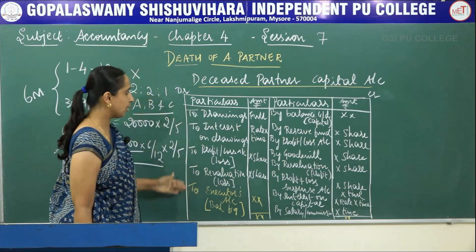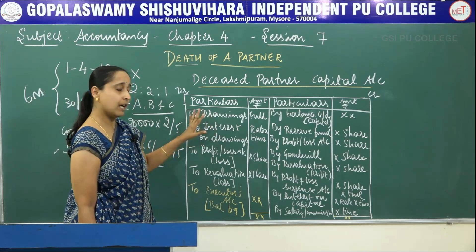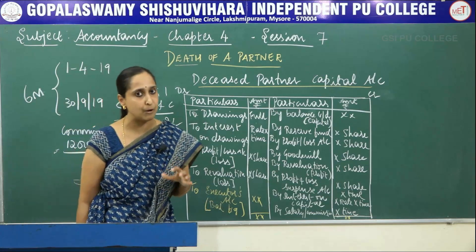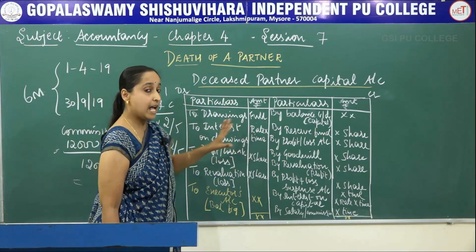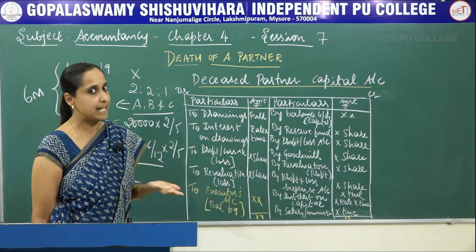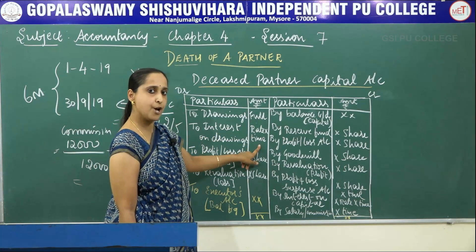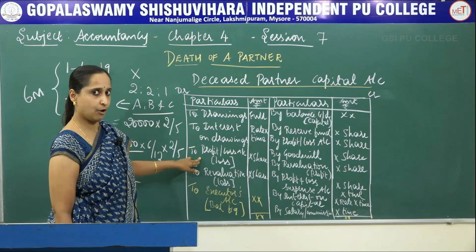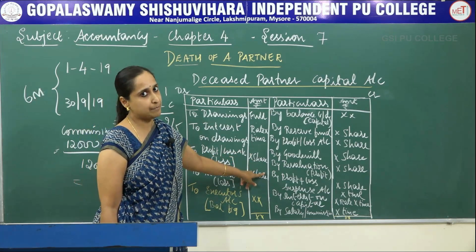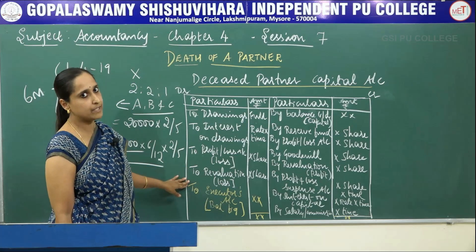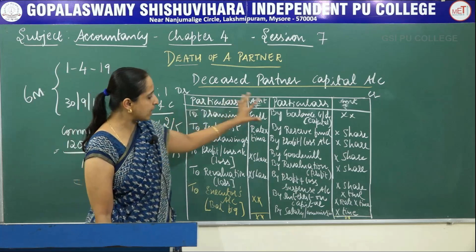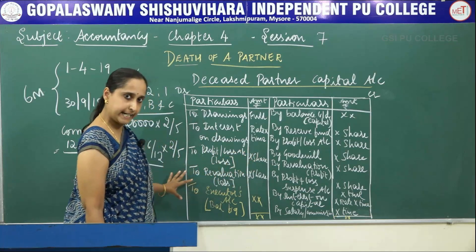Now let's see what items to record on the debit side. First is 'To Drawings' — the drawings amount will be given in the problem, so record the full amount. Sometimes interest on drawings is directly given; other times you calculate it using the rate and time: if he was alive six months, multiply by 6/12. Next, if there is any undistributed loss, that will be given in the asset side of the balance sheet — record the deceased partner's share. Similarly, revaluation loss will also be given in the problem — record the deceased partner's share on the debit side.